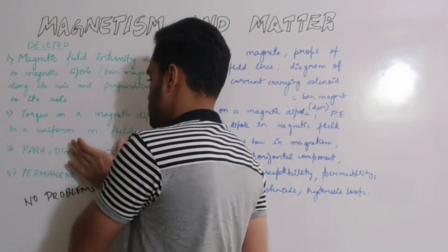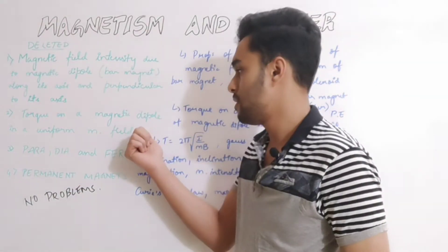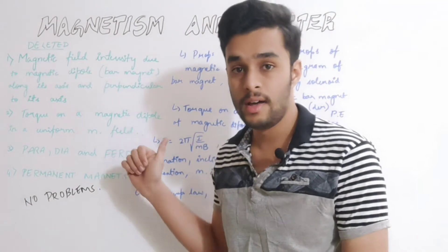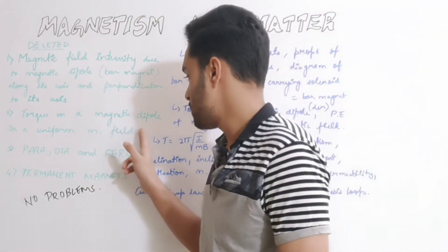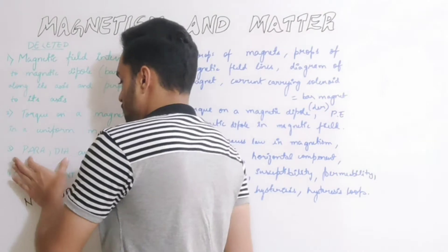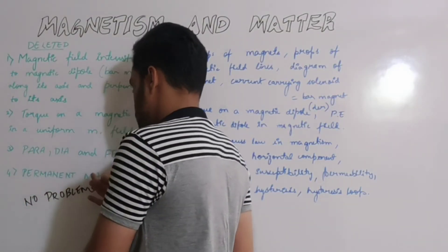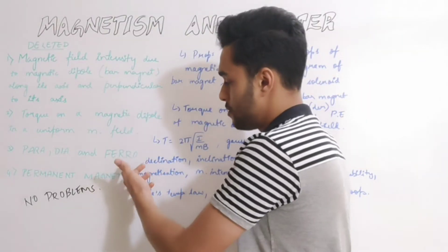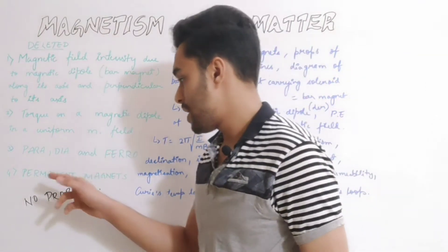Next thing is torque on a magnetic dipole in uniform magnetic field. This topic includes three marks derivation plus statement questions. Next topic is paramagnets, diamagnets, and ferromagnets. This is a little different topic.